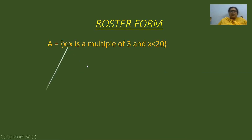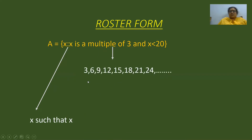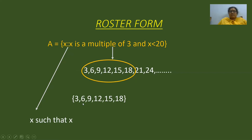Here is a set builder form. We read it as: x such that x is a multiple of 3 and x is less than 20. See carefully, here the knowledge of multiples of 3 is necessary. The multiples of 3 less than 20 go till 18. So we write them in a flower bracket with commas in between. This is nothing but a roster form.